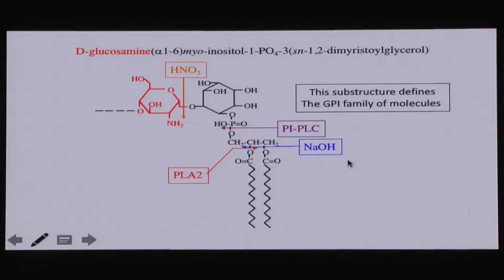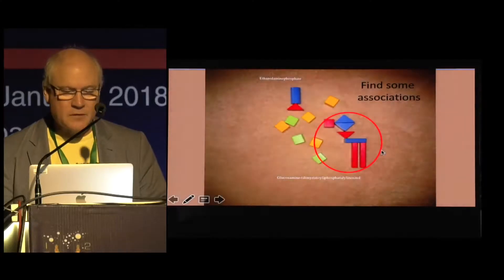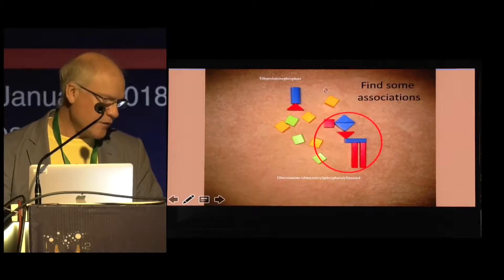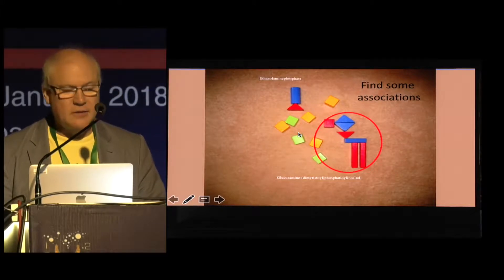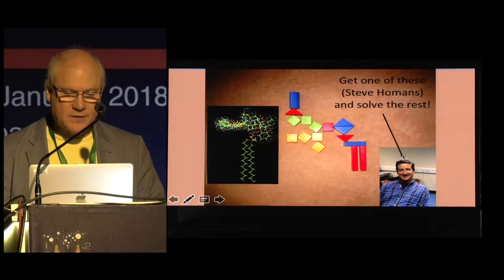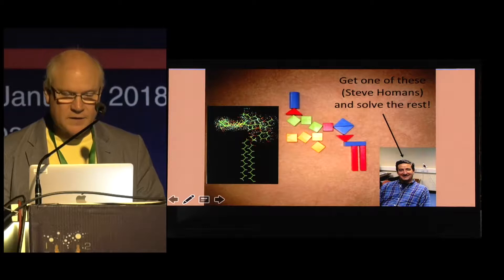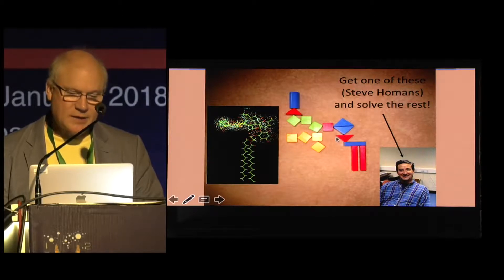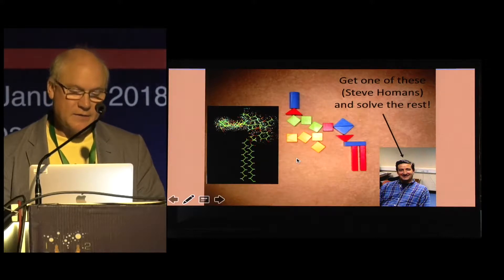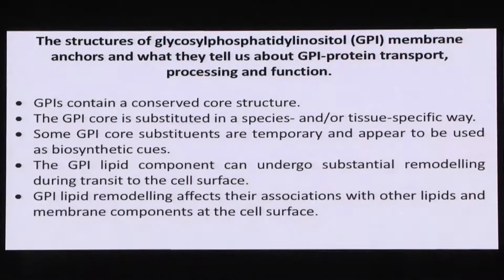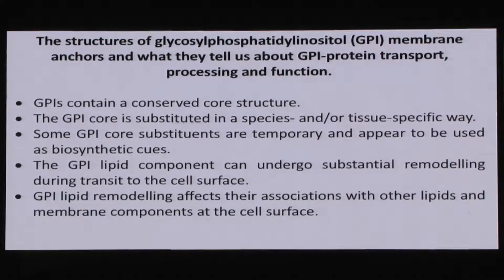There was still a lot of missing information, particularly all the carbohydrate bits, which are horribly complicated to sequence correctly. The best approach was to collaborate with a gifted NMR spectroscopist like Steve Homans. Steve and I formed a very powerful collaboration and completed not only this but several other GPI structures during the late 1980s and early 1990s.